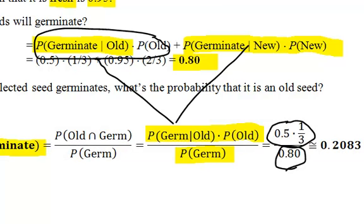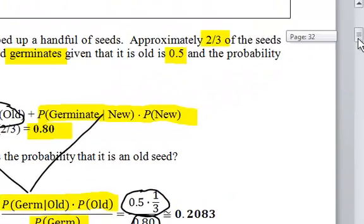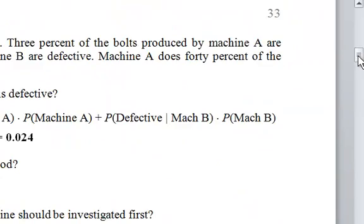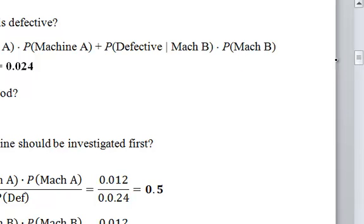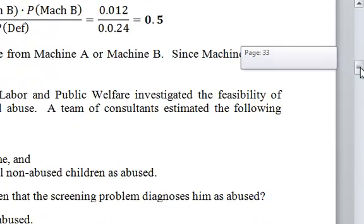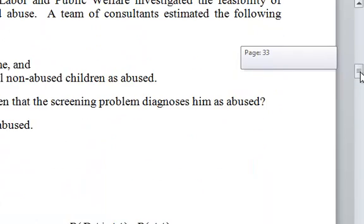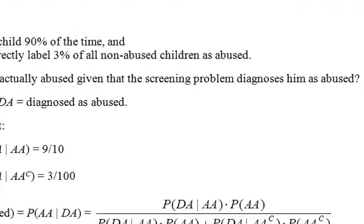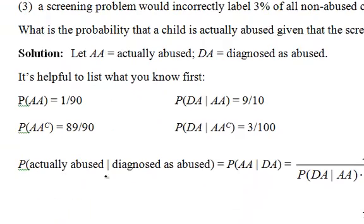I think the tip-off to me for Bayes' problem is in the question, it's a conditional. Like down here, suppose a bolt is known to be defective, what machine caused the problem? So, given defective, what machine caused the problem? This is very typical when you're trying to find false positives or false negatives. You know, given that you're diagnosed with the disease, what's the probability you actually have the disease given diagnosed with the disease?